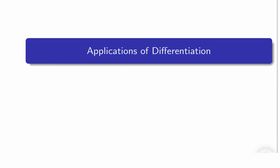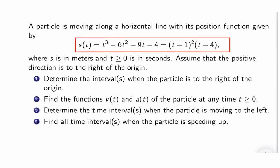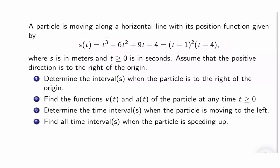In this lesson, we are going to answer some exercises and applications of differentiation. Suppose a particle is moving along a horizontal line with its position function given by the following. Here S is in meters and T is greater than or equal to 0. We assume that the direction is to the right of the origin. Let us determine the intervals when the particle is to the right of the origin.